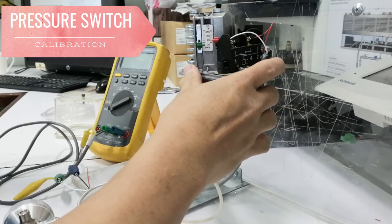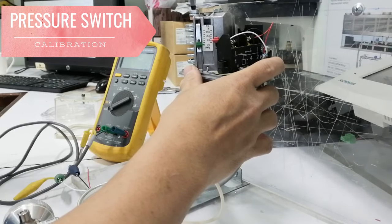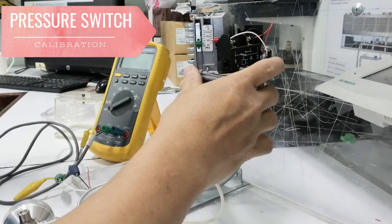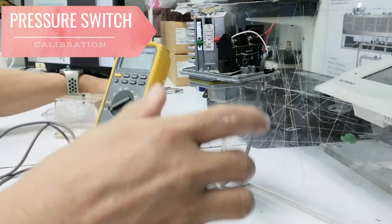Upper and lower switch points can be adjusted independently of each other using a screwdriver. The two switch points are indicated on the scale inside the unit.